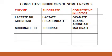From metabolism, here are some examples of competitive inhibitors of certain enzymes. In the case of lactate dehydrogenase, lactate is the substrate and oxamate is the competitive inhibitor. In the case of succinate dehydrogenase, succinate is the substrate and malonate is the competitive inhibitor, and so on for other enzymes.